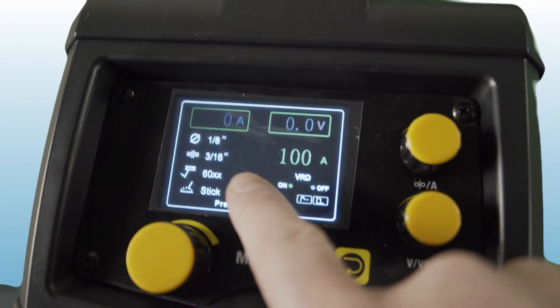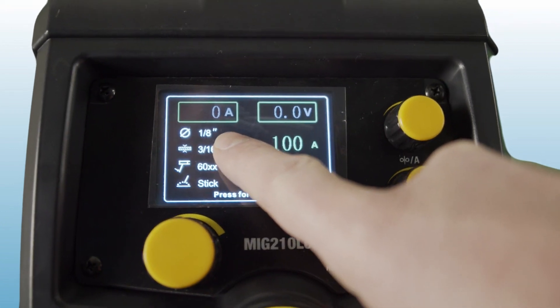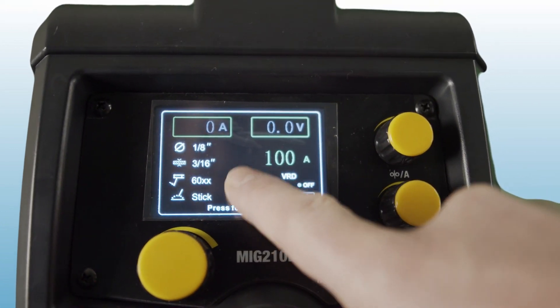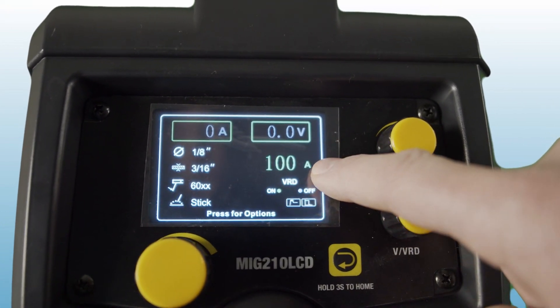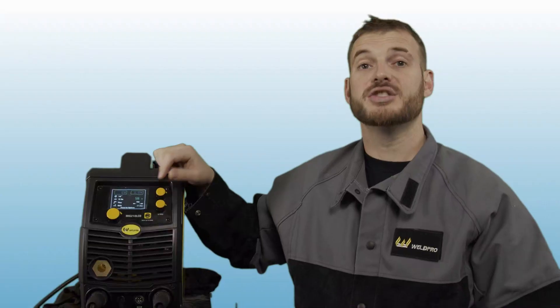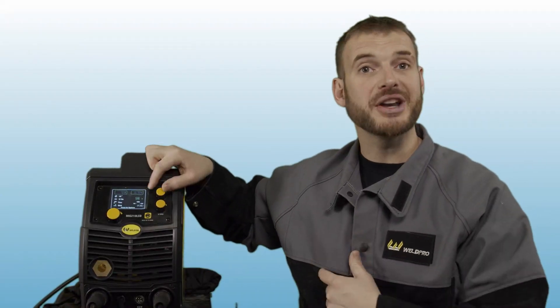This is great because at a glance you're able to see the electrode your machine thinks you're running, the process you're running, your material thickness, and your amperage readout. To adjust your amperage you'll use the top right knob on the display.